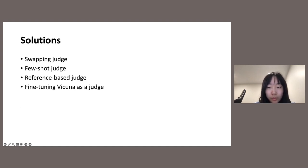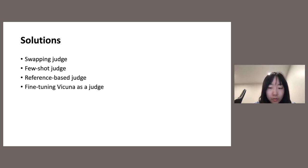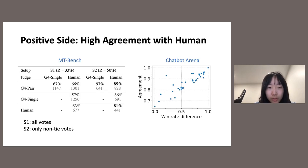To overcome these issues, we propose solutions. For example, it is recommended to always swap positions in pairwise comparisons and treat inconsistent votes as ties. We also tried reference-based chain-of-thought judging, and we tried fine-tuning Vicuna as a judge, getting some promising results. GPT-4 has limitations behaving as a judge, but it is still a promising approach. People can work on pushing LM-as-a-judge further — maybe not GPT-4, but try to build a model specially designed for judging that can have better judging performance even at a smaller size.